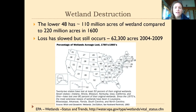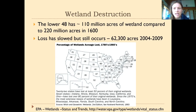The lower 48 states — not including Alaska and Hawaii — have about 110 million acres of wetlands today, compared to 220 million acres back in the 1600s when European Americans first arrived, so we've lost about half. The loss has slowed a lot due to regulation protecting remaining wetlands, but in more recent times we've still been losing significant wetland acreage — about 60,000 acres in the period between 2004 and 2010.